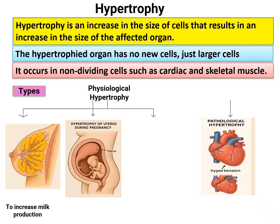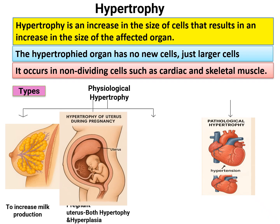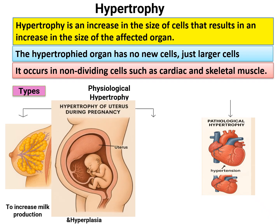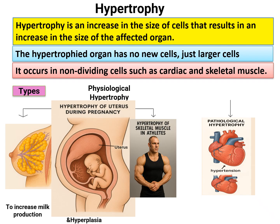Another example of physiological hypertrophy is the uterus during pregnancy. To accommodate the fetus, it has to increase in size, and the smooth muscles of the uterus increase in size to accommodate the newly forming fetus. Another example is hypertrophy of skeletal muscle in athletes — in bodybuilders who overuse the deltoid muscle, there is hypertrophy of the deltoid muscle.